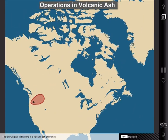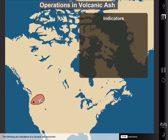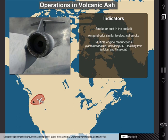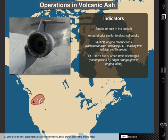Depending on the density of the cloud and the time of exposure, the flight crew will generally observe the following indicators that their aircraft has entered a volcanic ash cloud: smoke or dust in the cockpit; an acrid odor similar to electrical smoke or the smell of sulfur; multiple engine malfunctions such as compressor stalls, increasing EGT, torching from the tailpipe, and flame-outs; St. Elmo's fire or other static discharges accompanied by a bright orange glow in the engine inlets; and a fire warning in the forward cargo area.